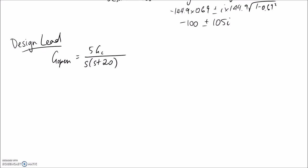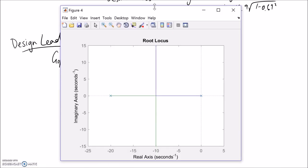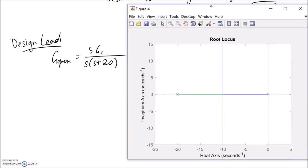That's our starting point. For the lead controller, GC takes a specific form. We need to introduce a zero and a pole such that these desired poles end up sitting on our root locus. Looking at our root locus as it stands, we have a pole at zero and a pole at negative 20. This is the one I've plotted from MATLAB — pole at zero, pole at negative 20 — and you can see the root locus lines go nowhere near our desired poles.